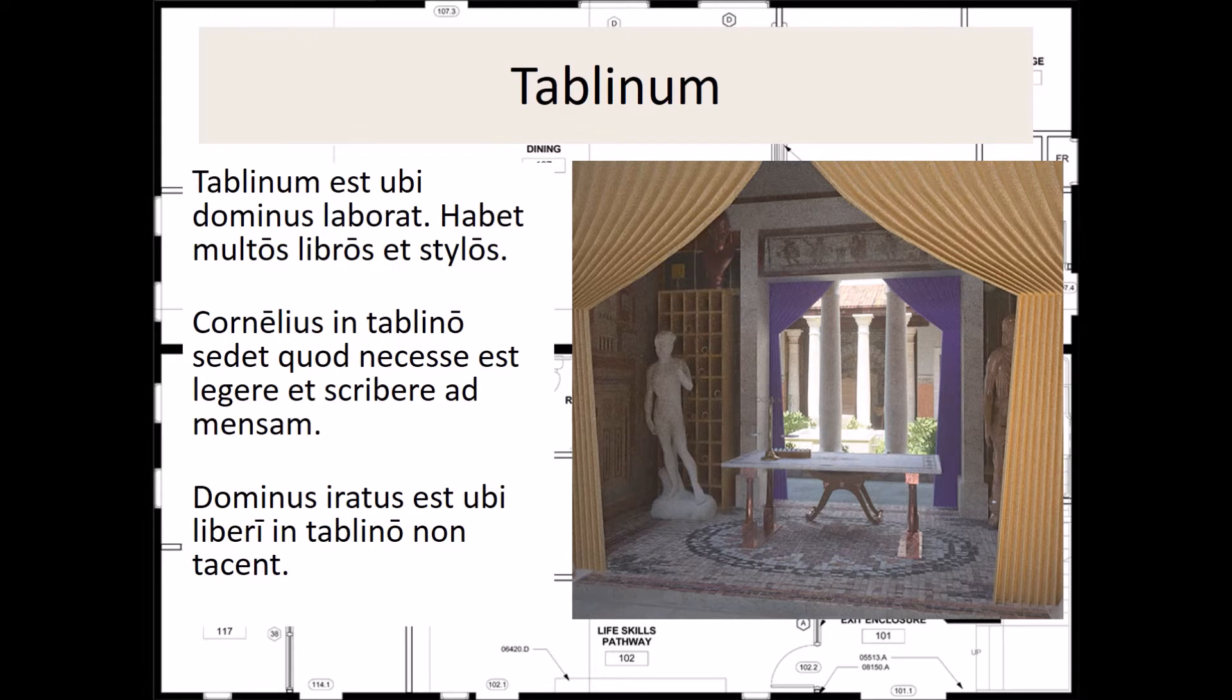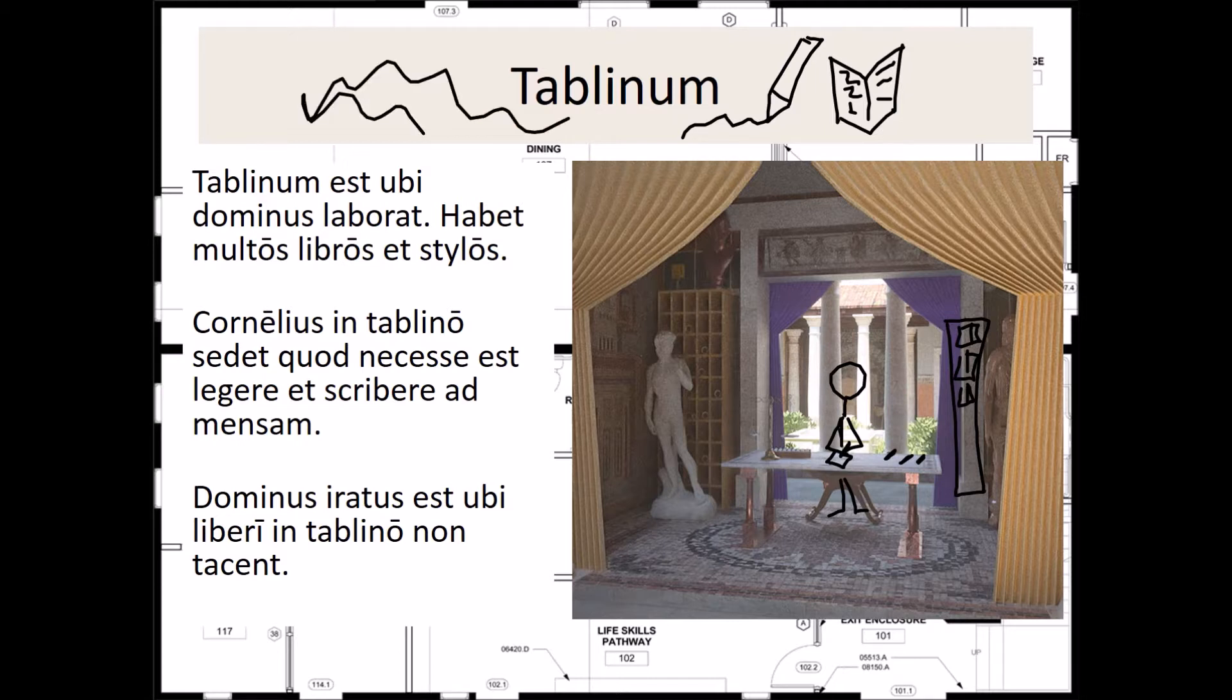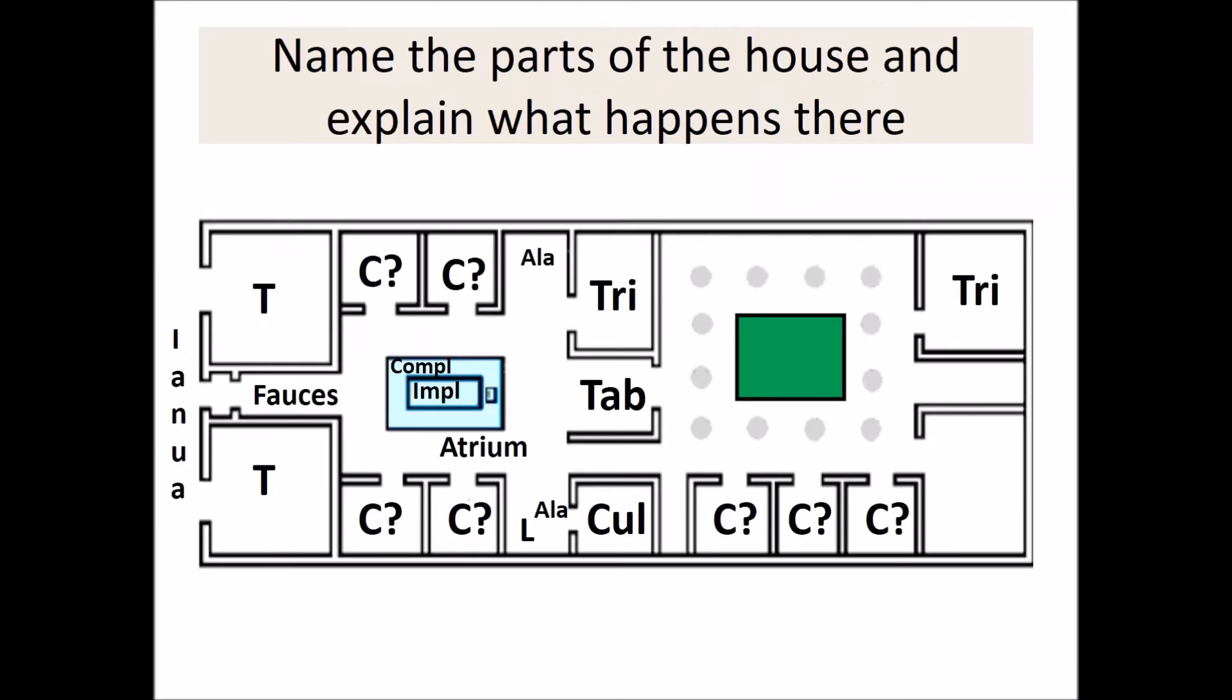The next room in our house is the tablinum. Tablinum est ubi dominus laborat. Habet multos libros et stilos. Cornelius in tablino sedet quod necesse est legere et scribere. Mensa... dominus irratus est ubi liberi in tablino non tacent. To skip, here you'll see the location of the tablinum on our typical Roman layout of the domus. The tablinum is located right in the central area, and it is the office or the work room of the master of the house, and this is particularly true if the dominus, if the master of the house, had clientes that he would be inviting over. As you can see, it's also open to the back area of the house if the domus did in fact have one.